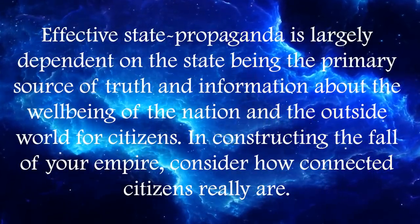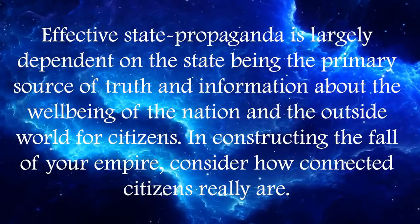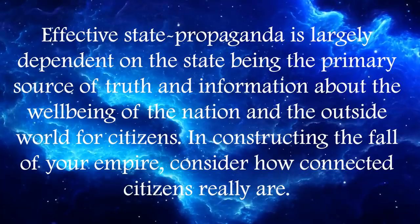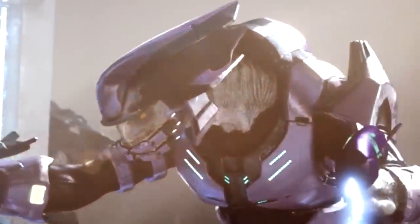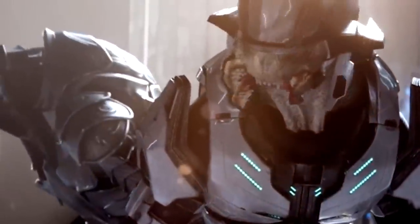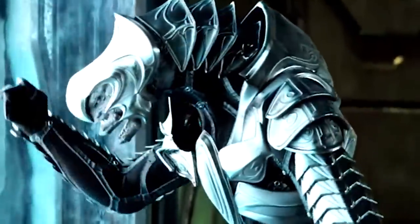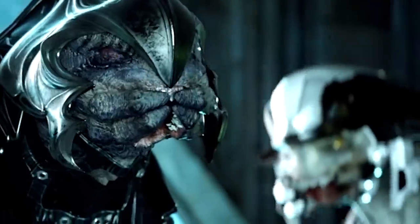In Orwell's 1984, we see how Winston begins to see through the propaganda designed to make him want to be part of Oceania when he begins reading books. No longer believing that propaganda, he begins to make moves for revolution — which fails horribly, but raises an interesting point. Effective state propaganda is largely dependent on the state being the primary source of truth and information about the well-being of the nation and the outside world for its citizens. This also means that the failure of propaganda is a lot more likely to play a part in the fall of science fiction empires, where technology makes it easier for citizens to communicate other ideas. In medieval worlds, it's easier to imagine that the town's only source of information is provided by the occasional traveler and the government — they would simply believe it.